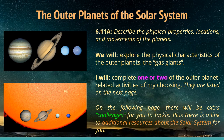The Outer Planets of the Solar System — TEKS 6.11a: Describe the physical properties, location, and movements of the planets. As a class, we will explore the physical characteristics of the outer planets, the gas giants. This week, you will complete one or two of the outer planet-related activities of your choosing, listed on the next page. On the following page, there will be extra challenges for you to tackle, plus a link to additional resources about the solar system.